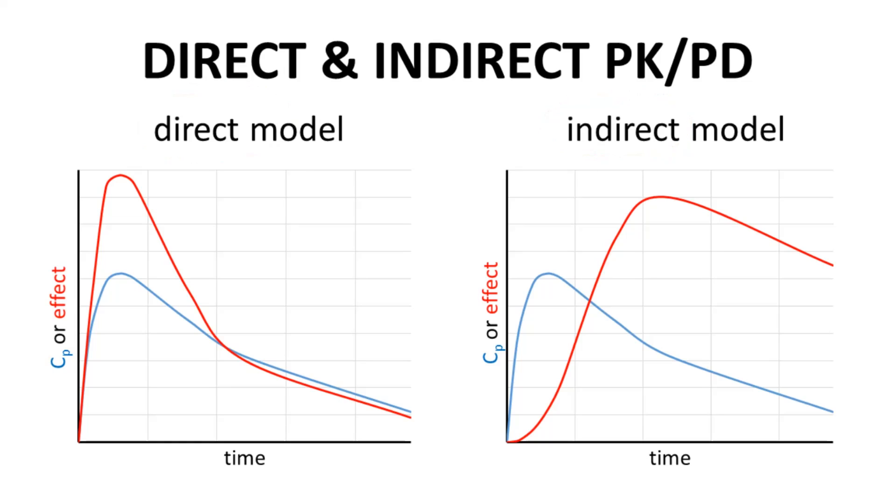For the direct model, if CP rises, the blue line, then the effect, the red line, also rises. If one drops, the other drops. The consequence of this relationship is that the curves peak at the same time.